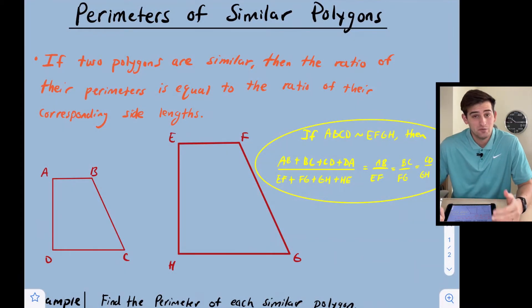Hello everyone, in this video we're going to talk about perimeters of similar polygons. If two polygons are similar, then the ratio of their perimeters is equal to the ratio of their corresponding side lengths.